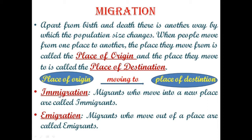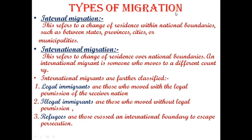When migrants move into a new place, they are known as immigrants. When migrants move out from a place, those migrants are known as emigrants. Types of migration: mainly it is of two types — internal migration or international migration.